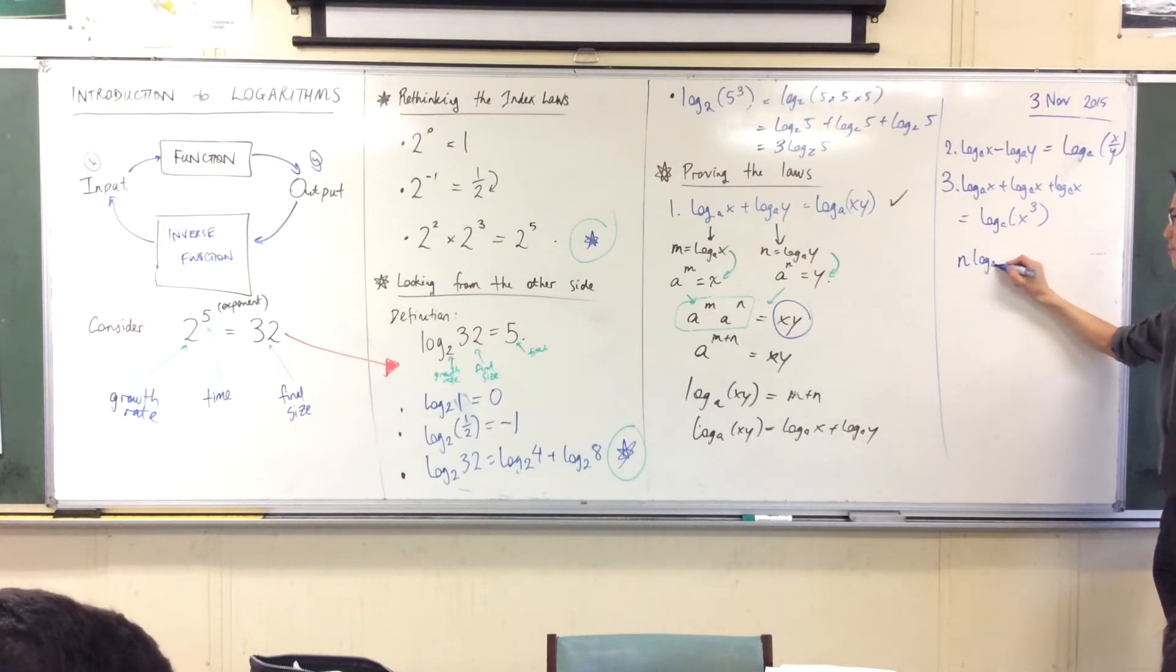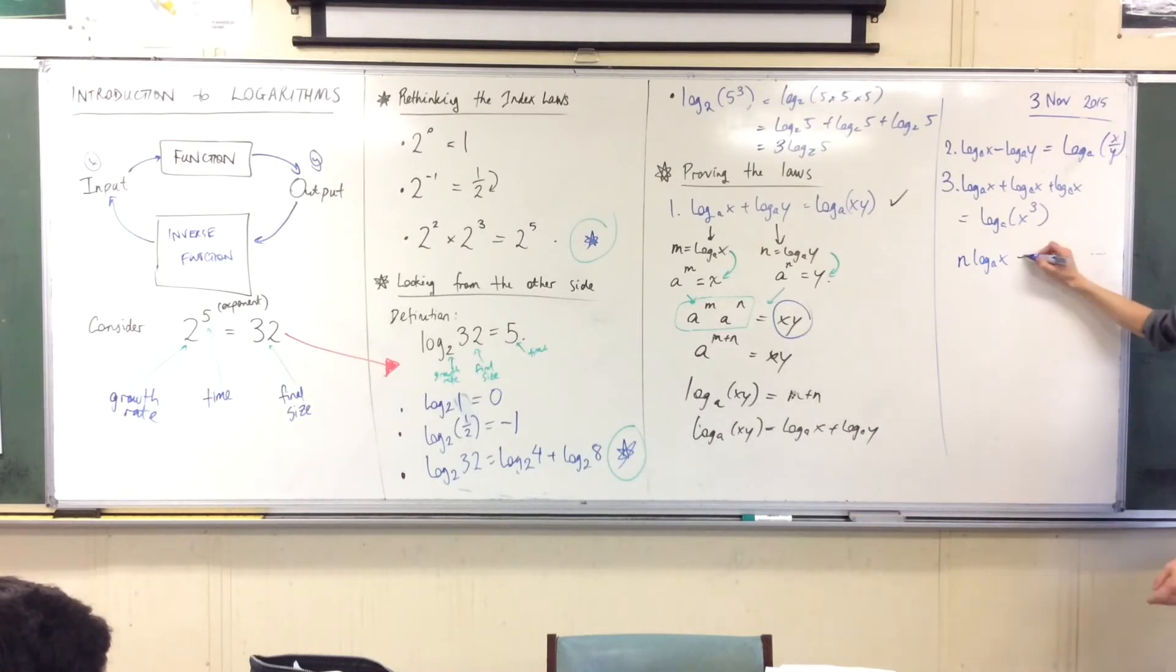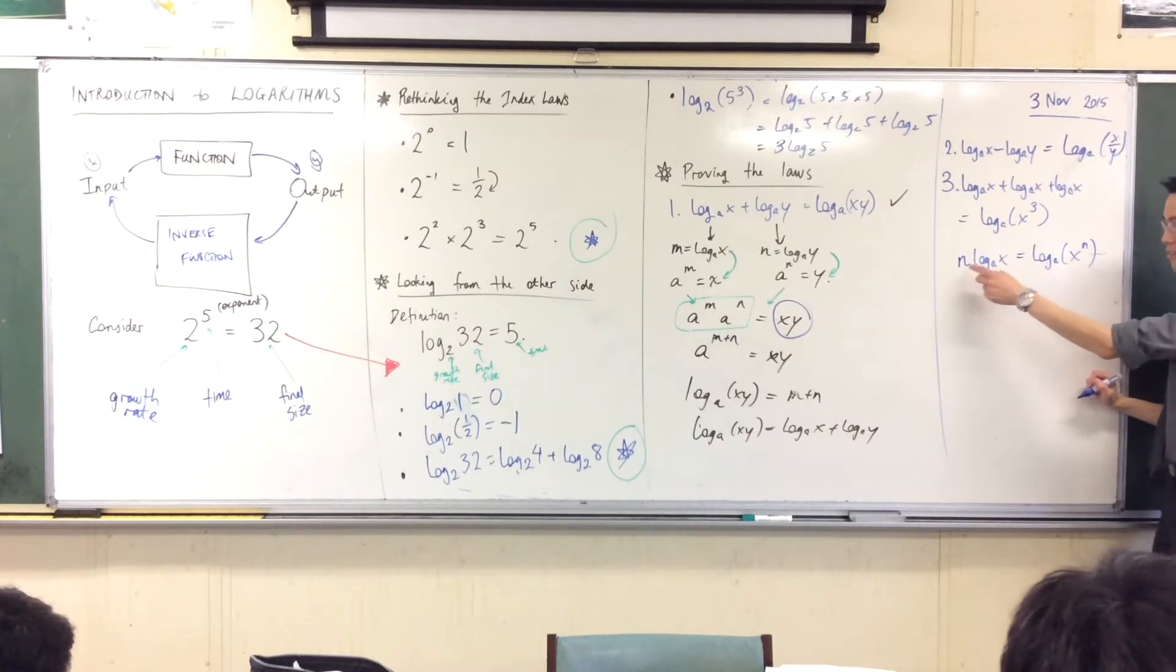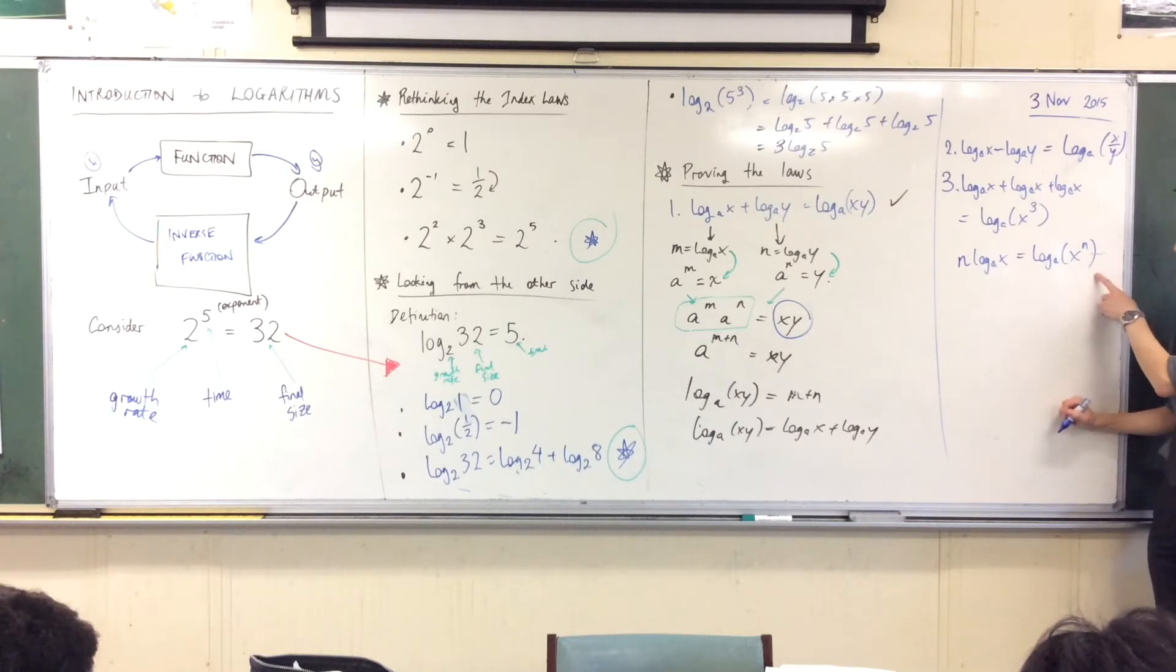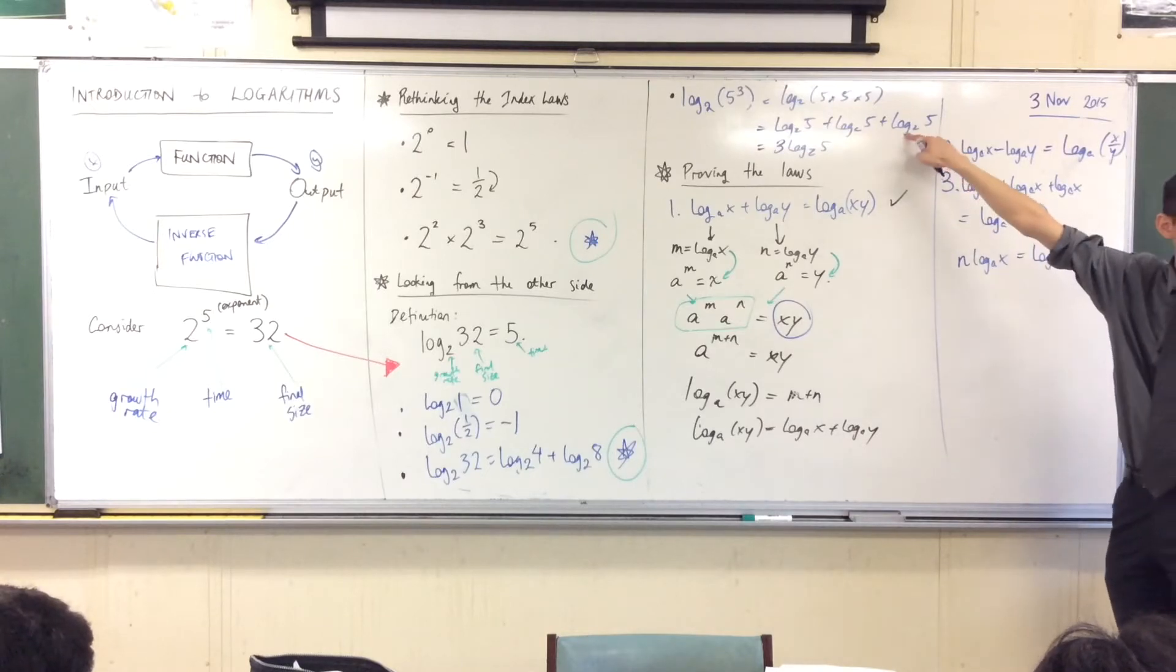n times, right? That's me adding n logs all together in a heap, right? Well, that's the same as multiplying this guy n times. You see, adding turns into multiplication, right? And just compressing that, multiplication becomes an index. So this is our power law that we use here, okay?